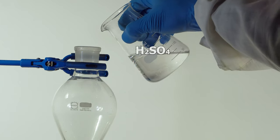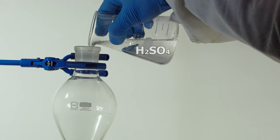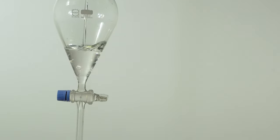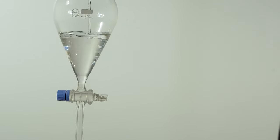To get lead tetrachloride, we add these crystals portion-wise with stirring in concentrated sulfuric acid poured into a separatory funnel.